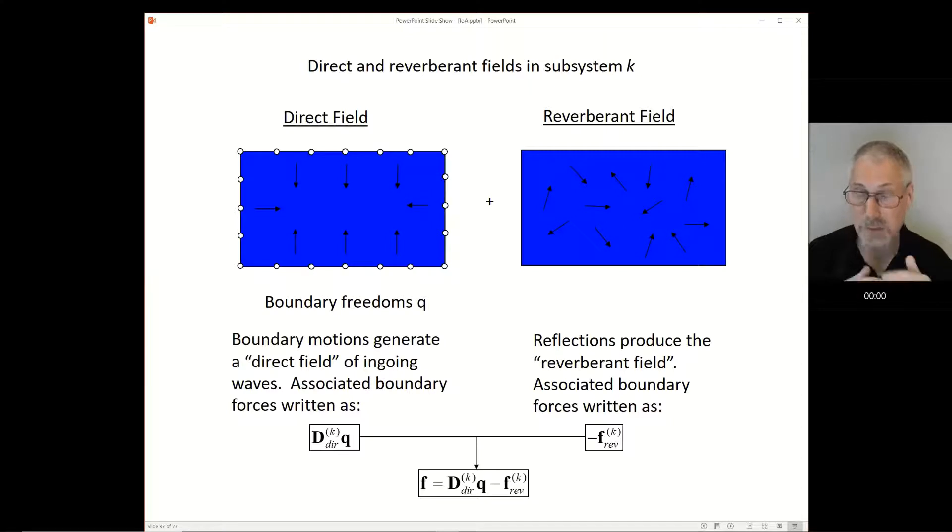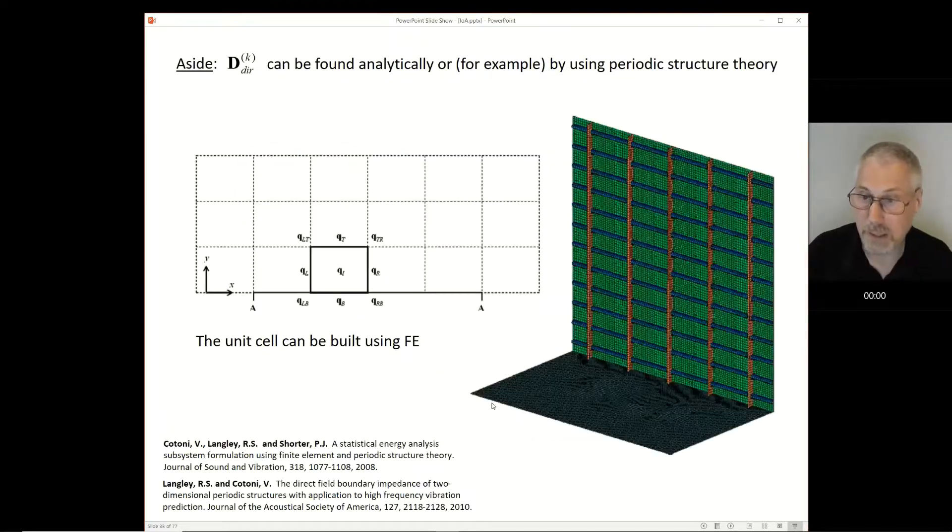But of course, life isn't simple because the waves bounce around. Because we could have scattering things attached to the panel, or uncertain boundary conditions, that scattering is random. So we get this random reverberant field. The boundary force has this nice direct field part and this not so nice reverberant field part. As an aside, the direct field stiffness matrix we can calculate by a variety of methods, one of which would be periodic structure theory. I won't go into that now, but suffice to say it's not difficult to calculate this D-direct. We can assume that it's known.